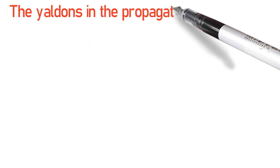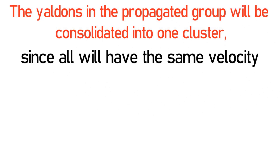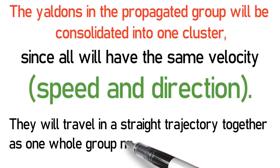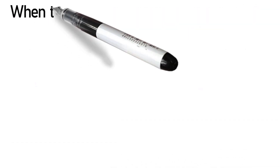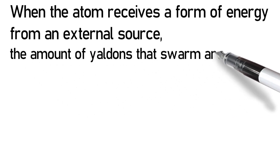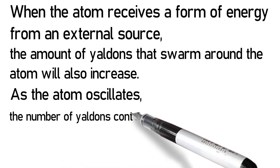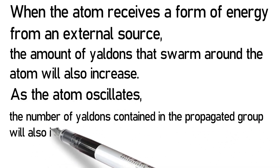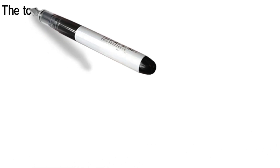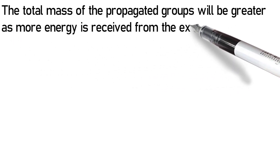The Yaldins in the propagated group will be consolidated into one cluster, since all will have the same velocity, speed, and direction. They will travel in a straight trajectory together as one whole group made of many Yaldins. When the atom receives a form of energy from an external source, the amount of Yaldins that swarm around the atom will also increase, and the number of Yaldins contained in the propagated group will also increase, resulting in a greater total mass of the propagated groups.